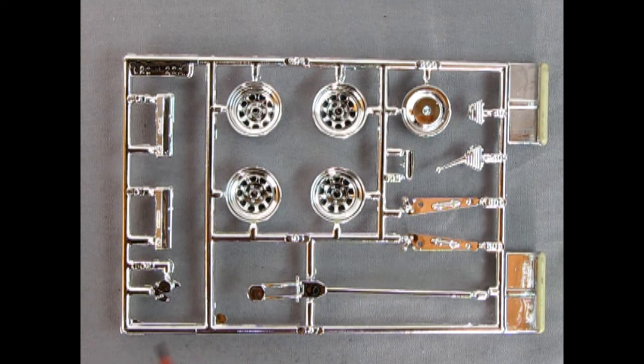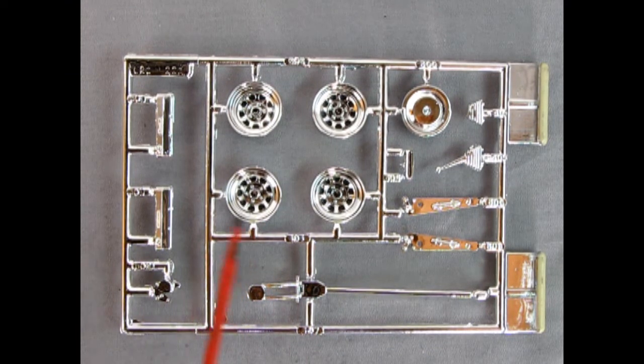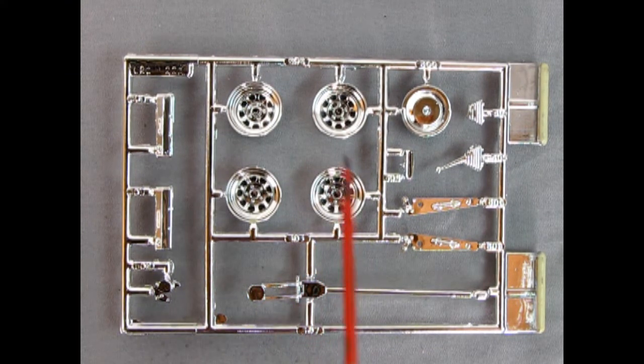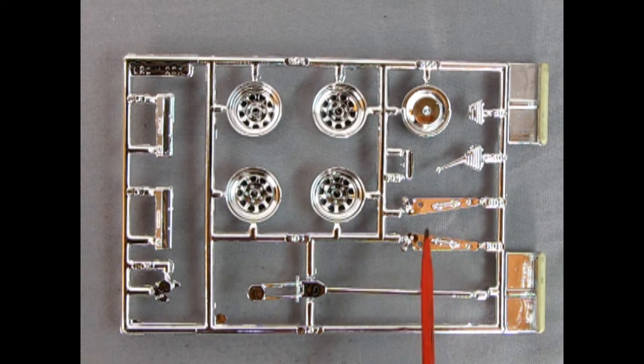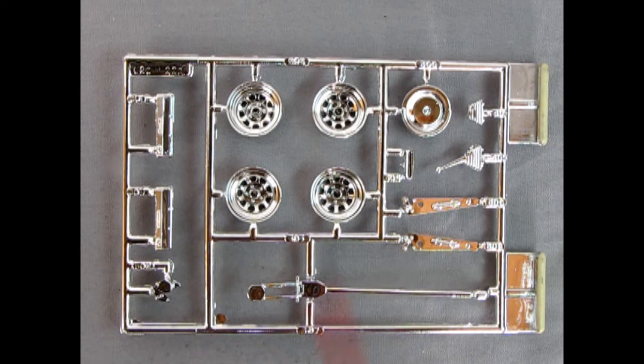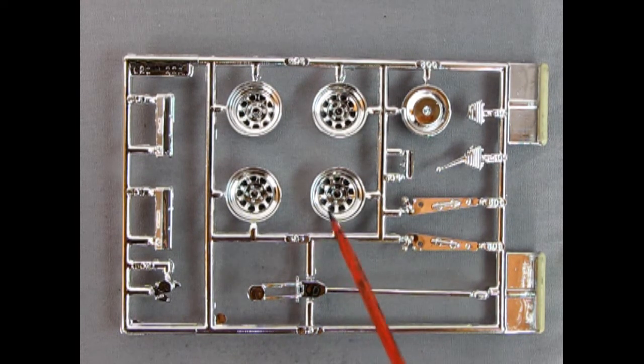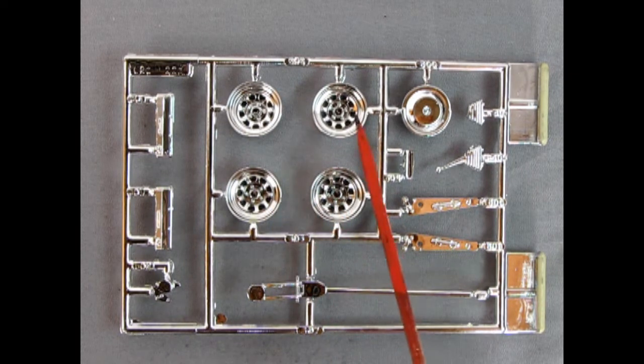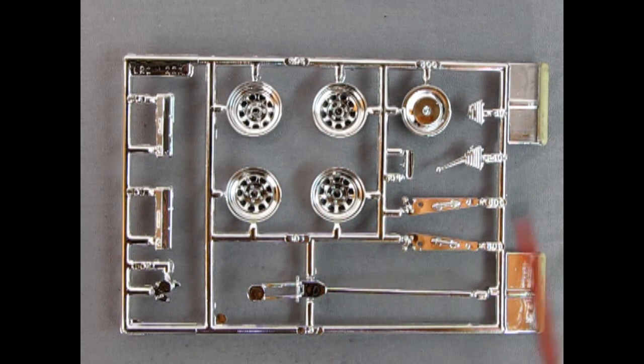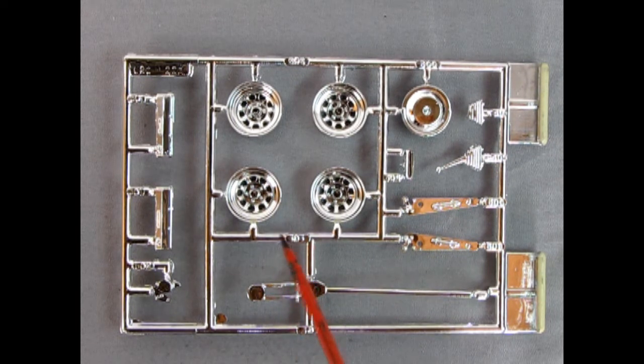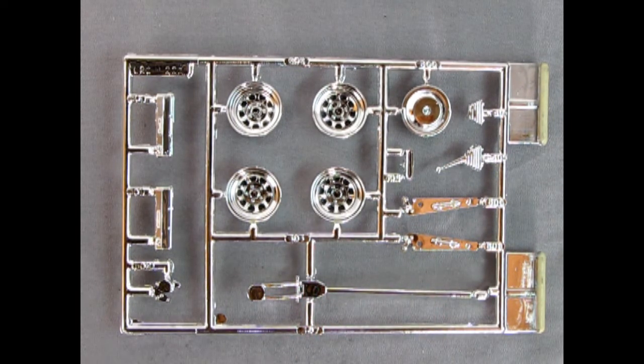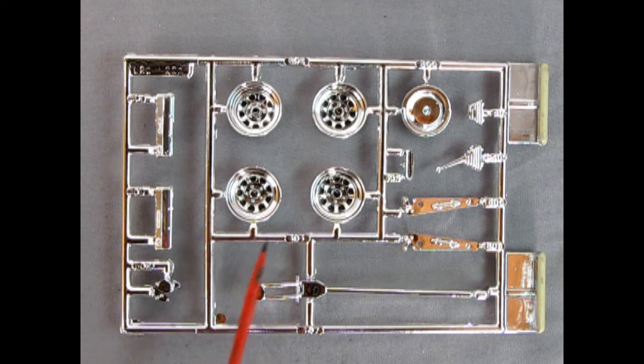And here we have our chrome parts tree. I do believe this is also generic amongst the NASCAR kits, they all seem to have these same kind of wheels as well as the jack and the air cleaner and the valve covers. Now maybe correct me if I'm wrong but most of these are actually stripped of the chrome and painted body color or something like that. So you know on the box it shows these as being painted black. Again you can easily strip the chrome with Easy Off oven cleaner and get it ready for that black paint job.